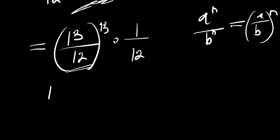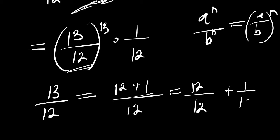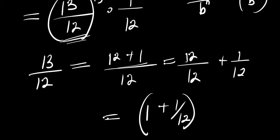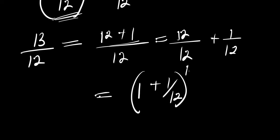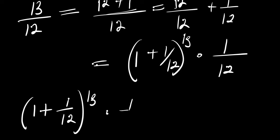Now, 13 divided by 12 can be written as (12+1) divided by 12, which equals 12/12 + 1/12, that is 1 + 1/12. So 13/12 = 1 + 1/12, and we raise that to the power of 13. So we have (1 + 1/12)^13 times 1/12.